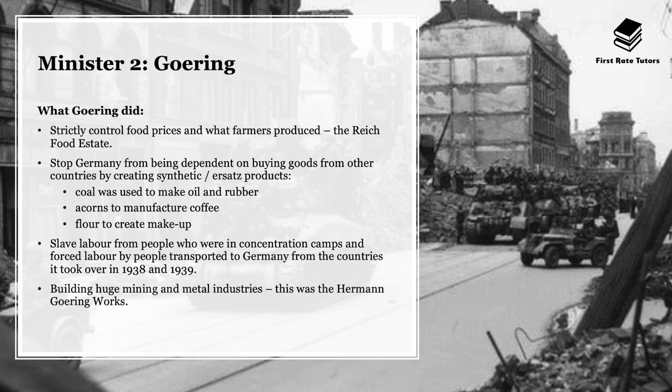A third thing that Hermann Goering did was use slave labor from people jailed in concentration camps, and there was a lot of forced labor by people transported to Germany from countries that Hitler took over between 1938 and 1939. Fourthly, Hermann Goering oversaw the building of huge mining and metal industries, called the Hermann Goering Works. All of this entailed employing lots and lots of people, and even if German men were not that well paid, at least they had jobs and Hitler really focused on these numbers.